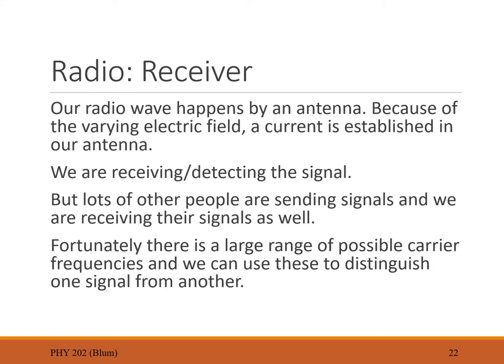A large transmitting antenna sends out the signal. That radiating wave reaches another antenna, where the changing electric field produces a current — detecting the original signal. However, many sources are sending radio waves simultaneously, so the question becomes: how do we select the one signal we want and distinguish it from all the others?